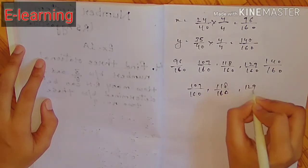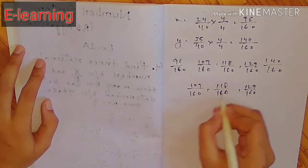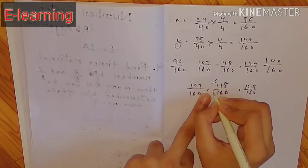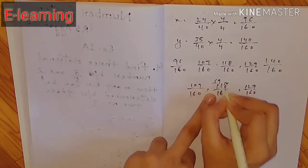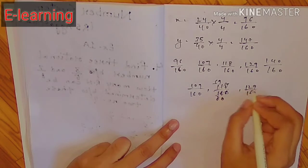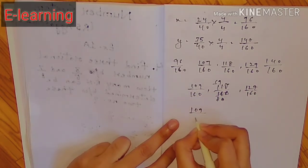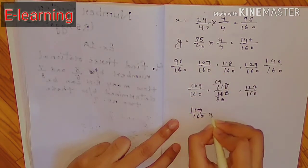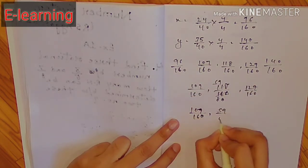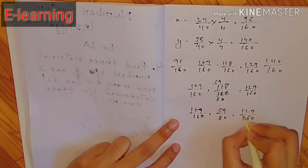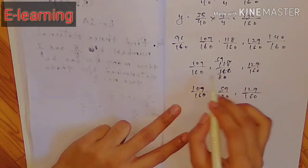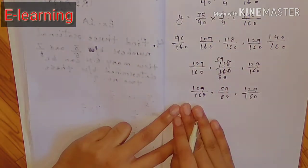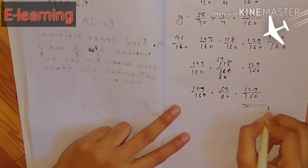अब देखिए 107/160, 118/160, 129/160। इनमें ऊपर नीचे दोनों cancel कर सकते हैं जैसे — 2 से cancel करेंगे: 107 and 160 cancel नहीं होते, 59/80 हो जाता है। यह इसका answer है। ज़रूरी नहीं कि एक ही answer हो — अगर trick और formula सही है तो कोई भी valid answer सही होता है।